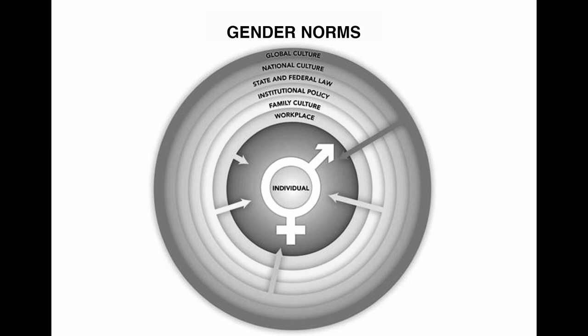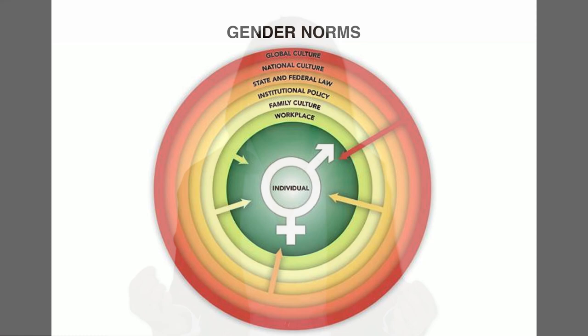Gender norms and behaviors are produced through social institutions such as workplace culture, family culture, institutional policies, state and federal law, national culture, and global culture. An individual is born into a gender system which, as I said before, changes over time and place. Individual behavior is shaped by the workplace, for example. What we are interested in is how gender norms influence science and technology.